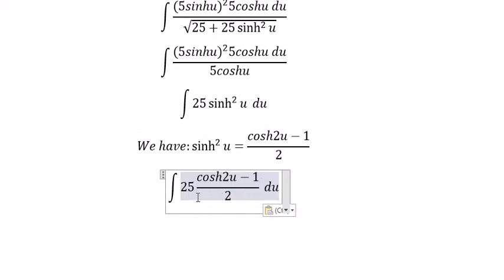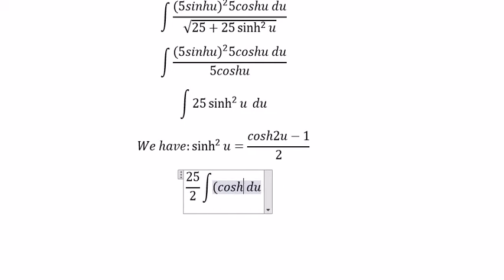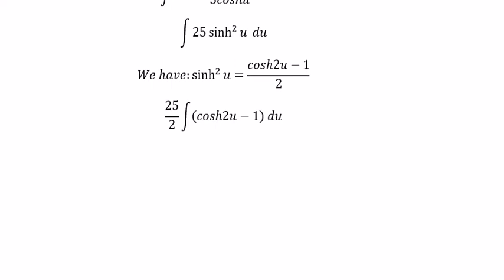25 over 2 we put outside. So now we got cosh 2u minus 1. And now we can get the final answer.